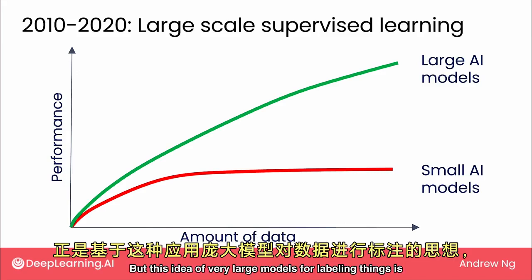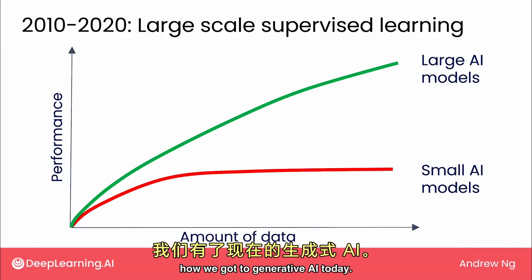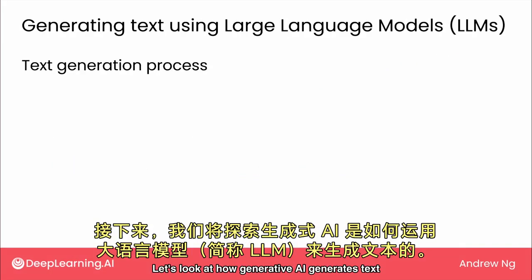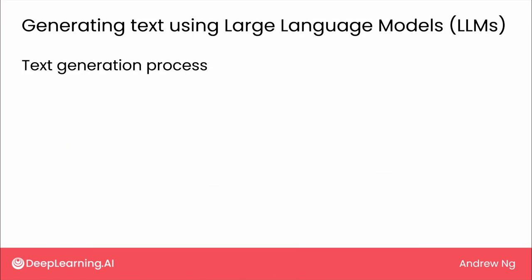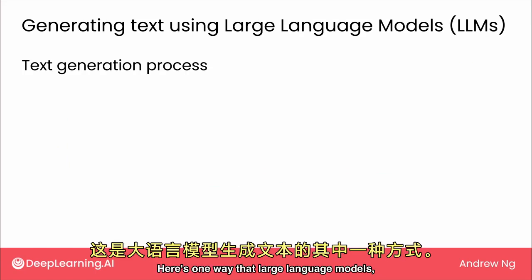But this idea of very large models for labeling things is how we got to generative AI today. Let's look at how generative AI generates text using a technology called large language models. Here's one way that large language models, which are abbreviated LLM, can generate text.